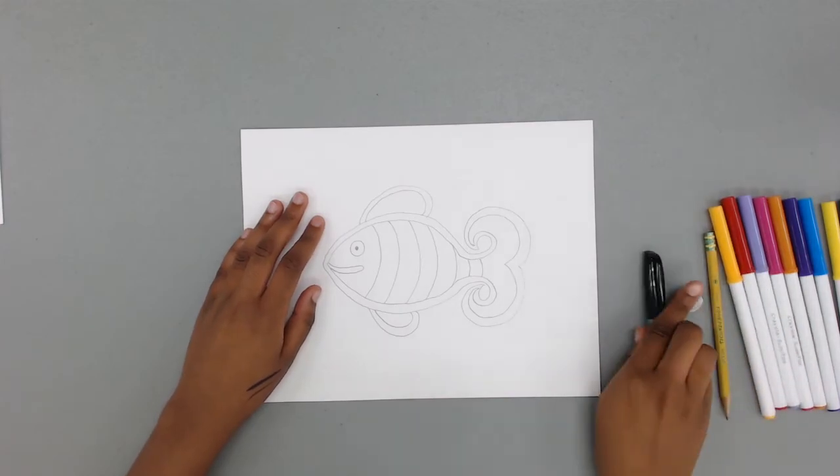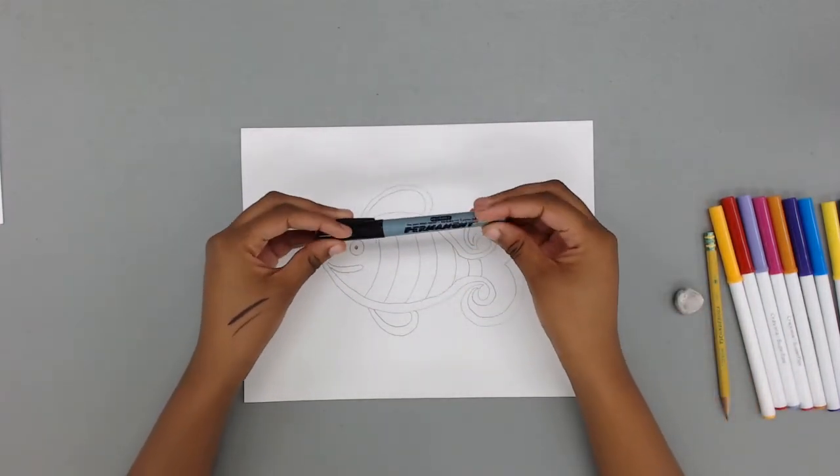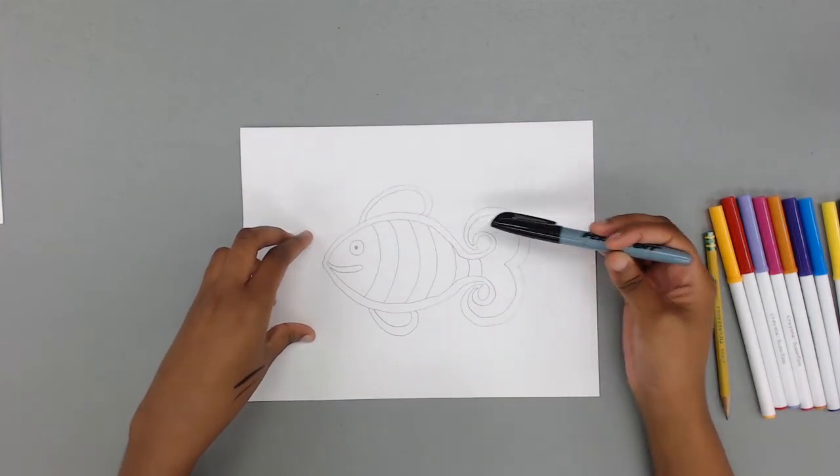Now that we've finished drawing our fish, we're going to use a black sharpie to outline all the pencil lines that we drew.